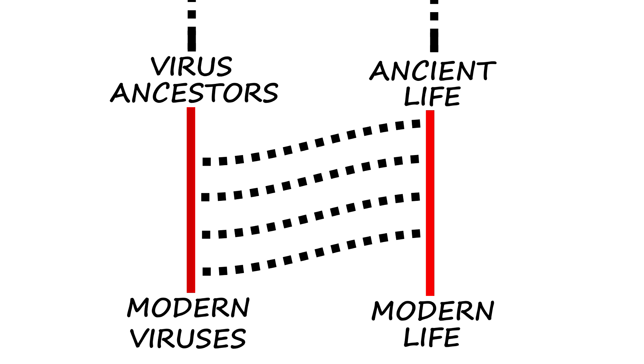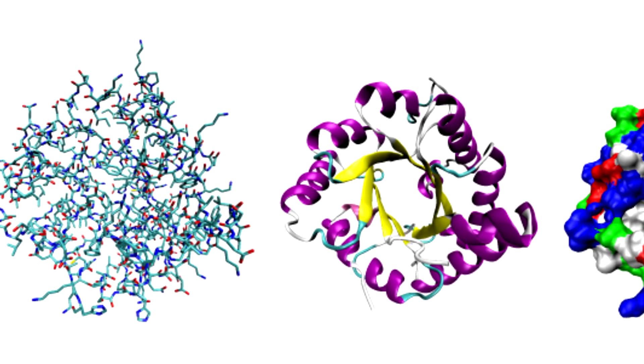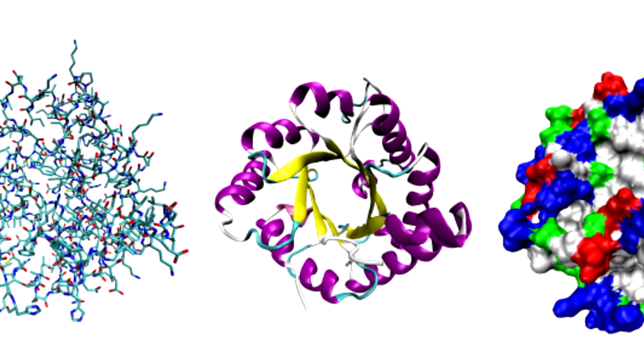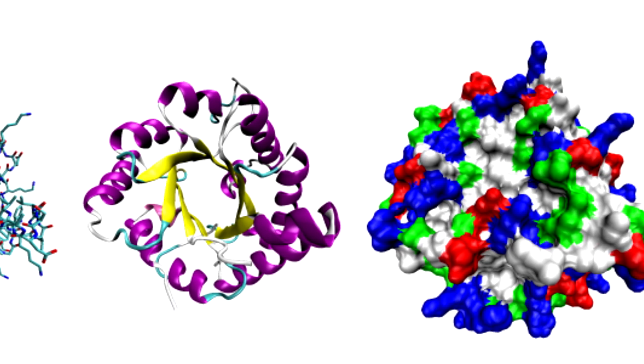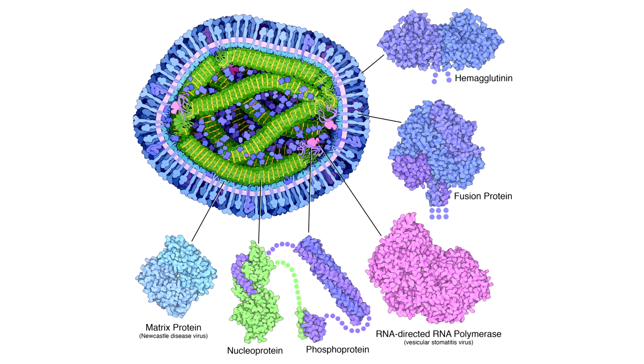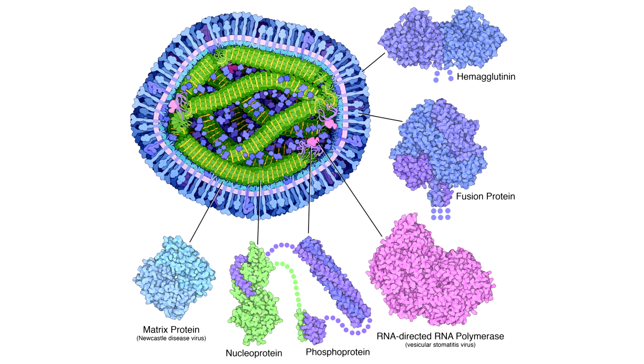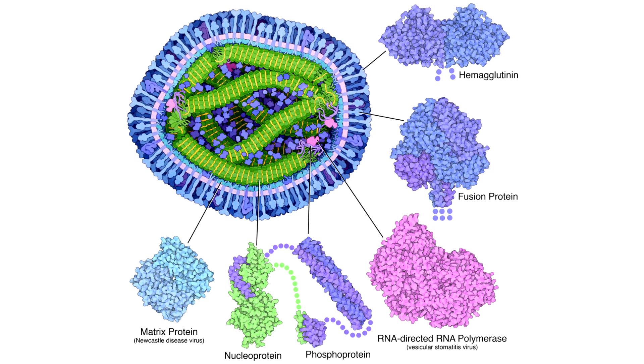This resulted in some genes from their host cells being acquired in the genetic material of the viruses. Some of these genes were responsible for encoding major proteins that had a diverse range of applications in their host cells. But throughout virus evolution, the viruses started to use these structural proteins to create their own structures.